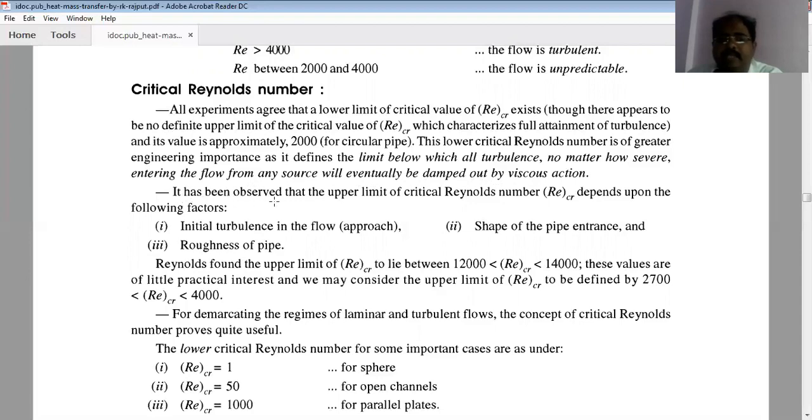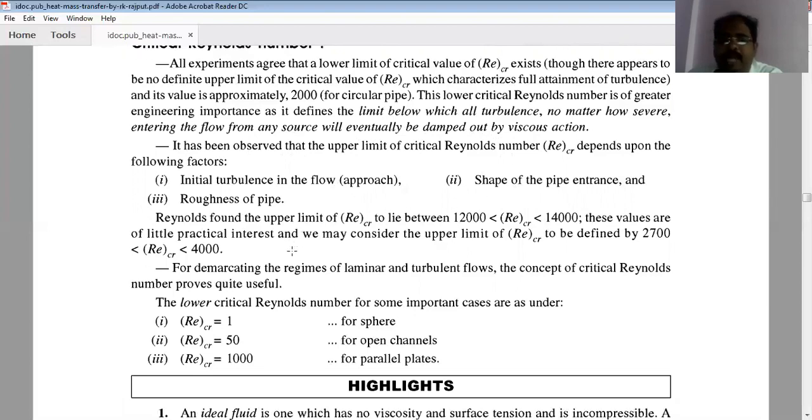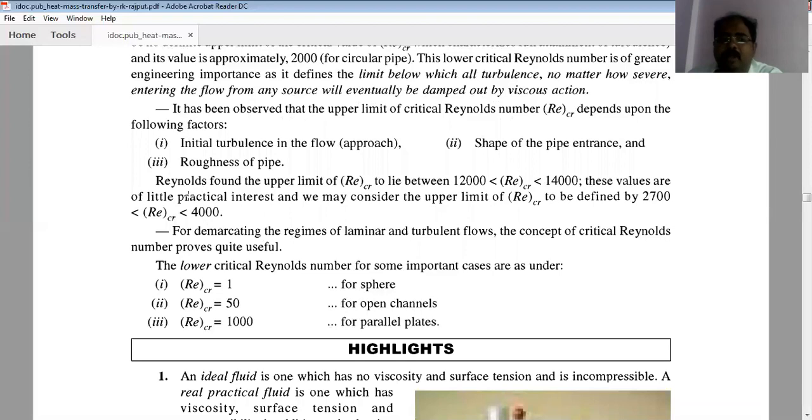It has been observed that the upper limit of critical Reynolds number depends upon the following factors: initial turbulence in the flow, shape of the pipe entrance, and roughness of the pipe.